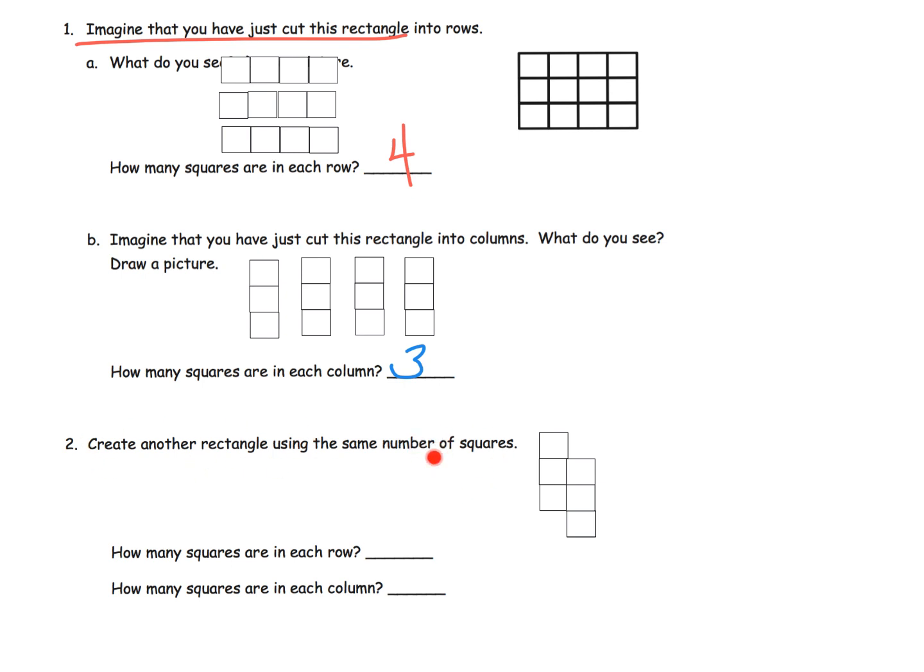Create another rectangle using the same number of squares. We've got a bunch of squares here, and we're going to create another rectangle using those same 12 squares. Try not to create any gaps, and of course, you can see I'm leaving gaps all over the place, so do as I say, not as I do. There's one example. Now is that the only example? No, but it's the one I came up with, and that's perfectly fine. So how many squares are in each row? In my case, the answer is two. And how many squares are in each column? The answer is six.